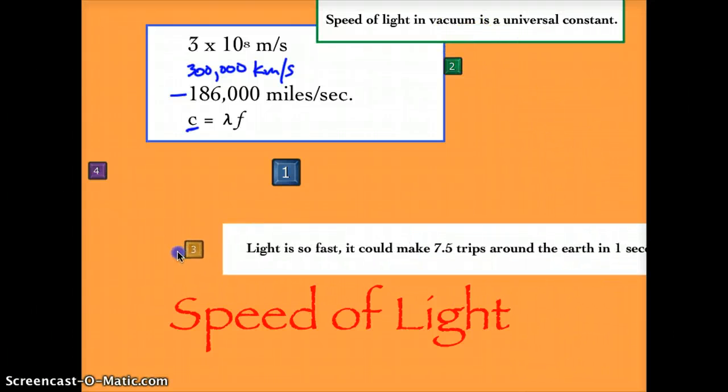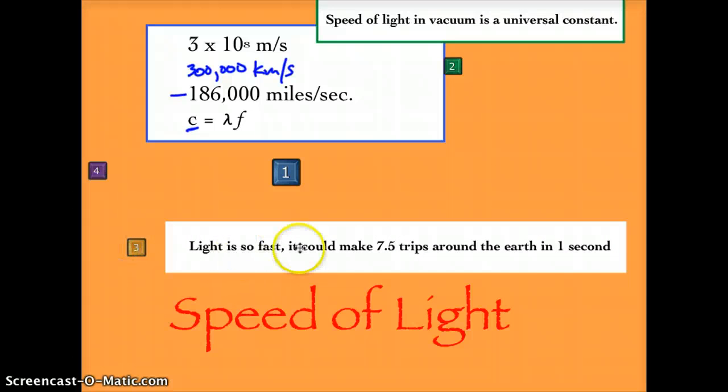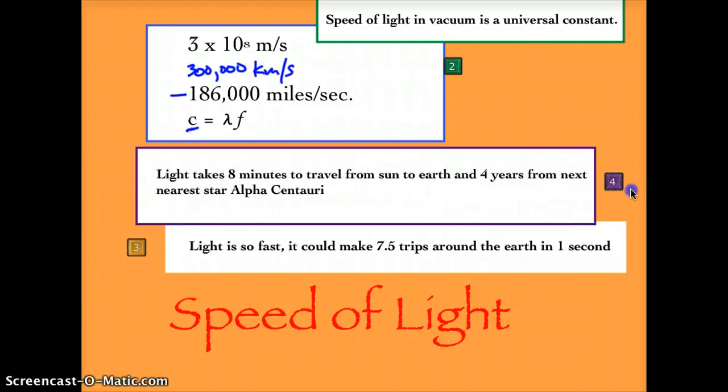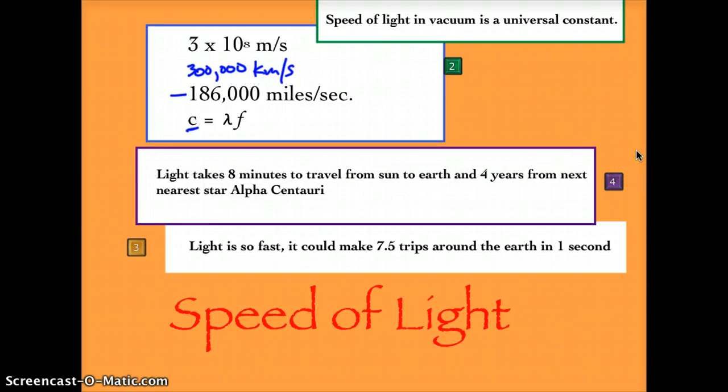Light is so fast it can make 7 and a half trips around the Earth in one second. And then, if we time it, light takes 8 minutes to travel from the sun to the Earth. That distance is 93 million miles. So, at the speed of 186,000 miles per second, it takes 8 minutes for that light to get here.